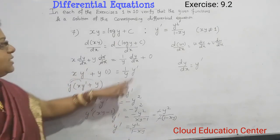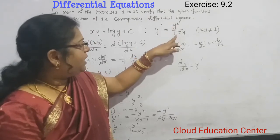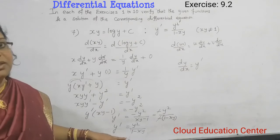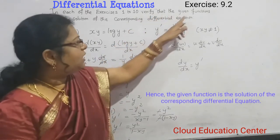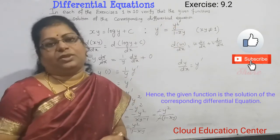So here we got the answer. The equation is y dash equals y square divided by 1 minus xy. LHS equals RHS. Hence, we verified that the given function is the solution of the corresponding differential equation.